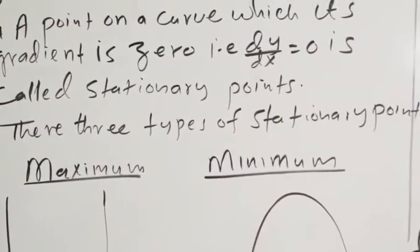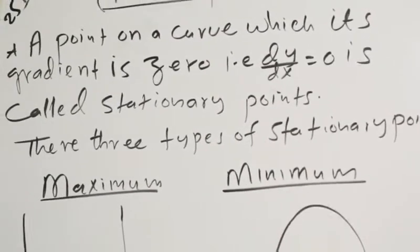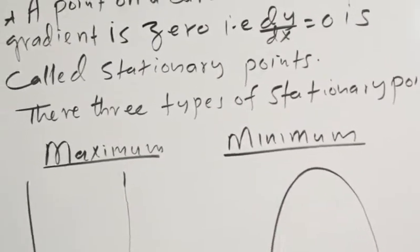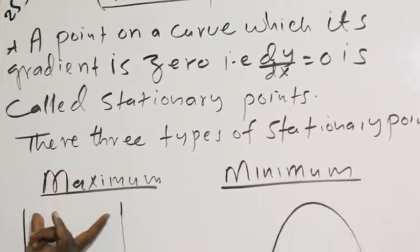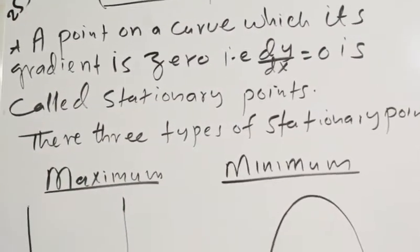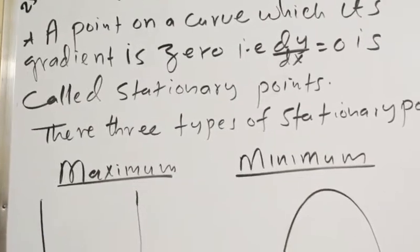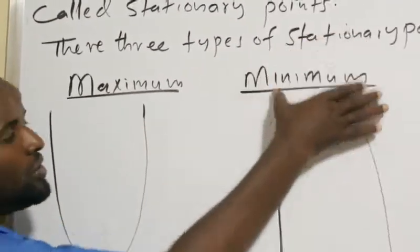There are three types of stationary points. In each case, the gradient at the stationary point is zero.